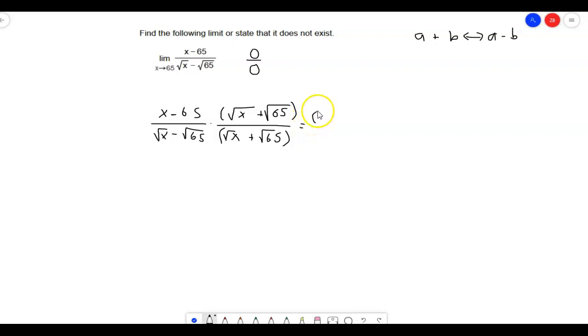Why? Because I've done a bunch of these and I know that we're probably going to end up canceling something out. And if I multiply it together, it's going to end up being a big old mess. Plus the square root of 65.